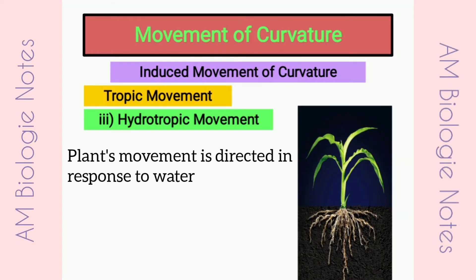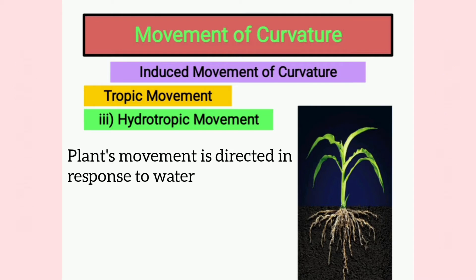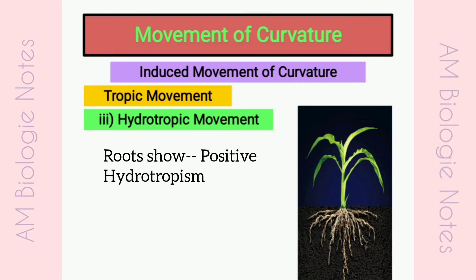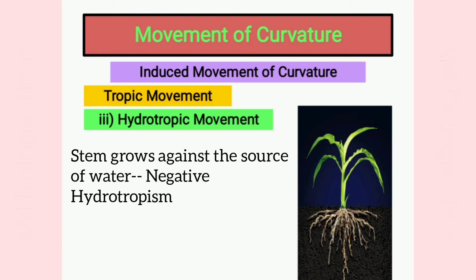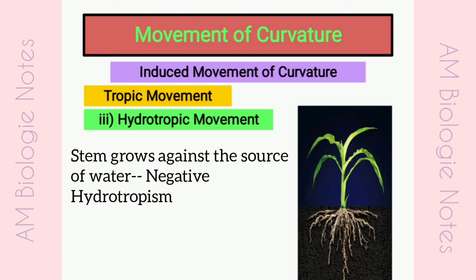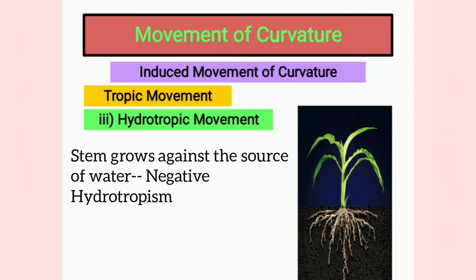Hydrotropic movement: Here, plant movement is directed in response to water. Plant roots show positive hydrotropism. The stem grows against the source of water, so it shows negative hydrotropism.